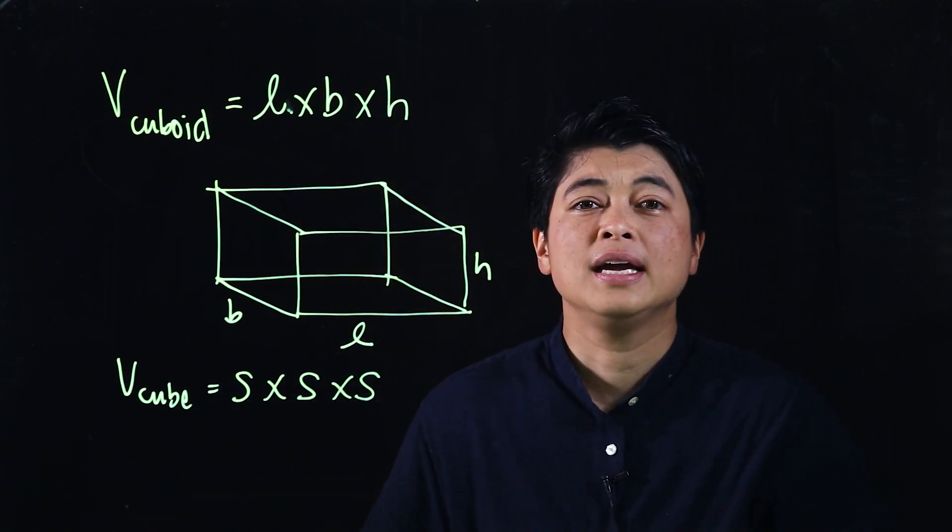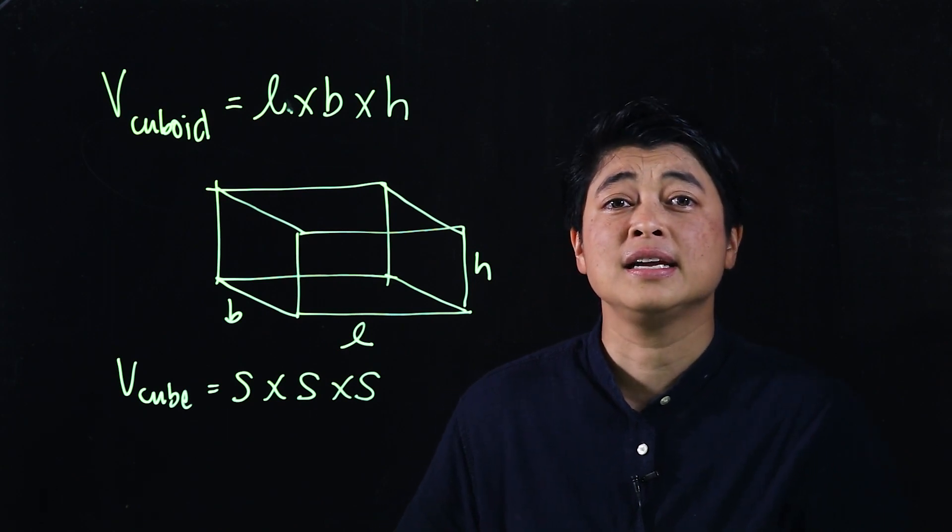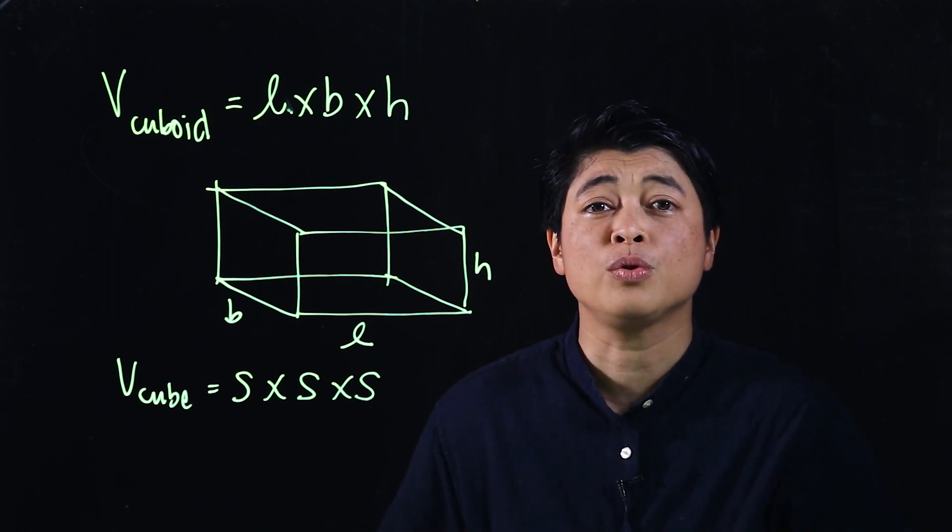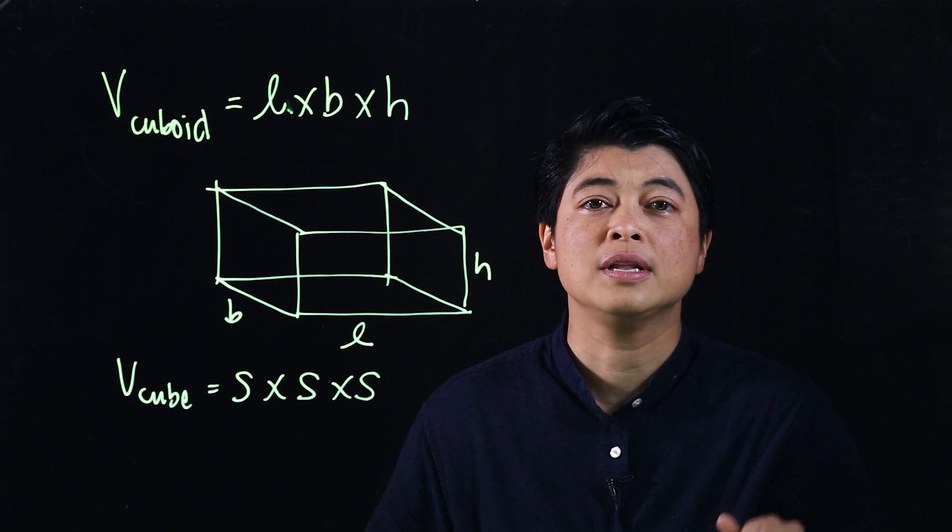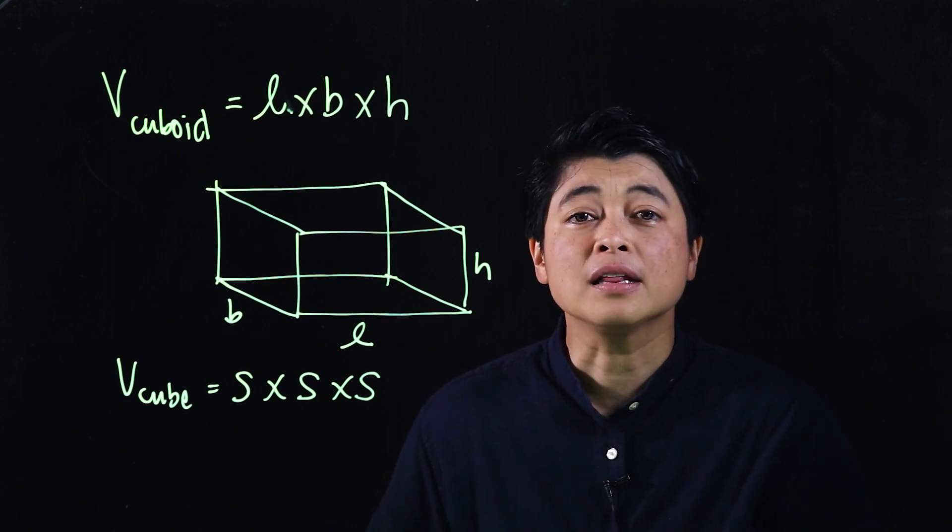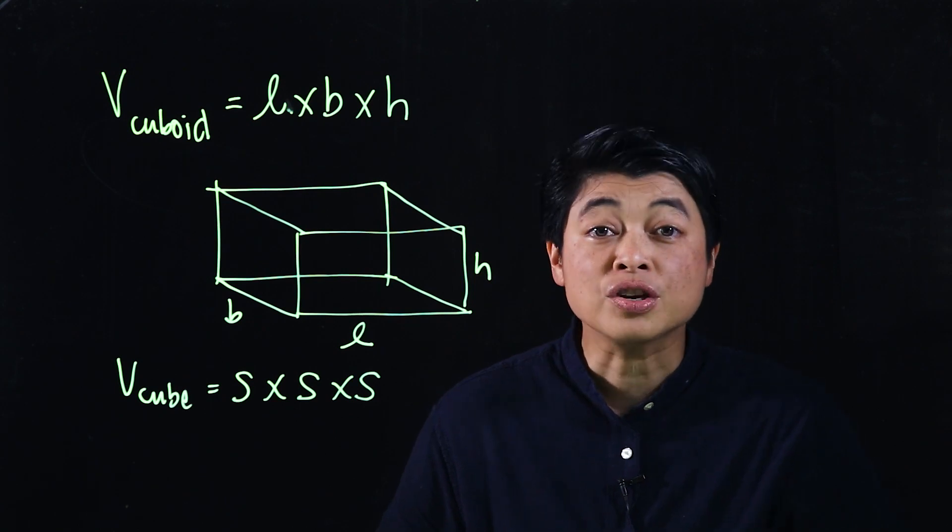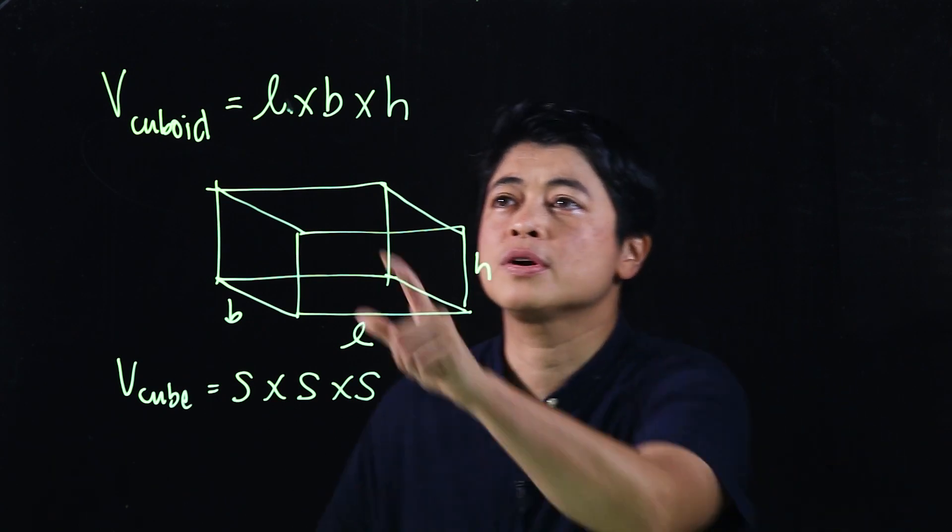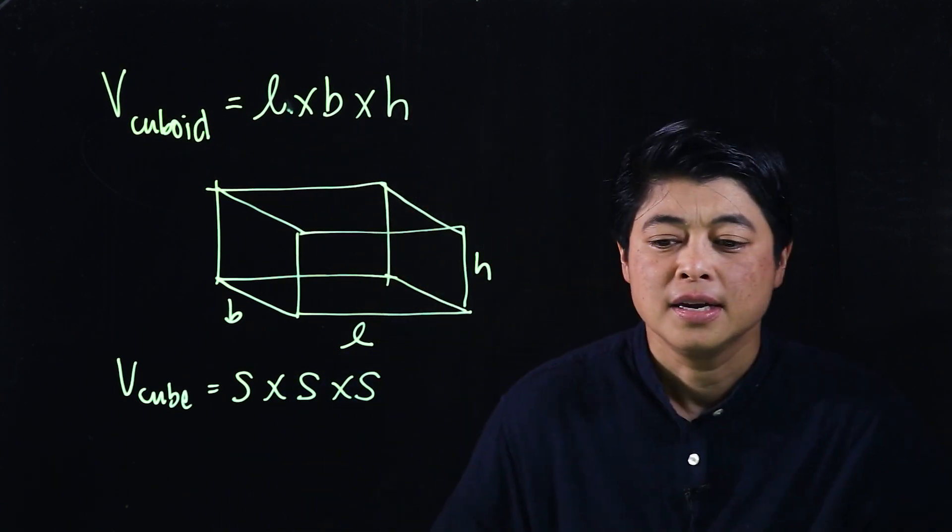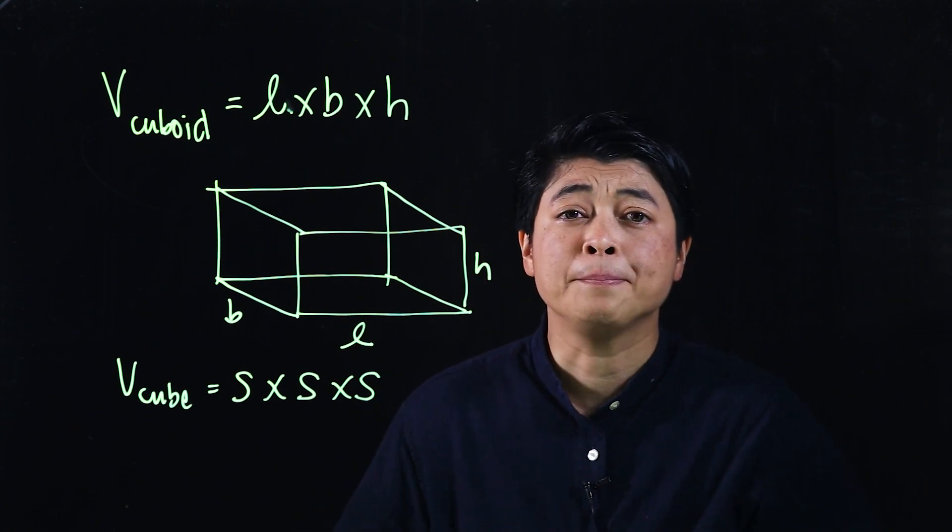So in essence, the difference between volume and area is: in area we're only multiplying two things because we're in two dimensions. But when in 3D or three-dimensional figures, then that means we're multiplying three things.